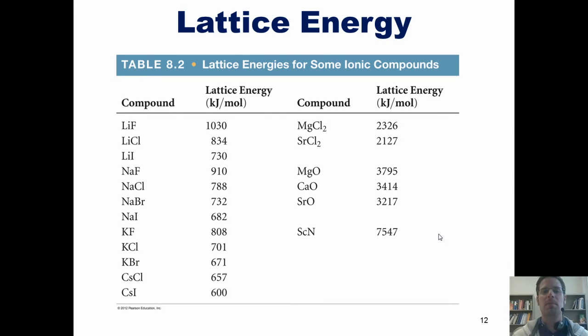This table shows us a number of lattice energies for various ionic compounds. As we analyze it, you'll notice, for example, that separating sodium and fluoride requires 910 kilojoules per mole. Separating magnesium and oxide requires 3795 kilojoules per mole. Separating cesium from iodide requires 600 kilojoules per mole, and so forth and so on. One of the trends you should notice is this. The numbers get very, very big for these compounds over here. Notice for scandium nitride, the number is huge. I wonder why that is. Think about it momentarily, as I'm going to provide you with the answer shortly.